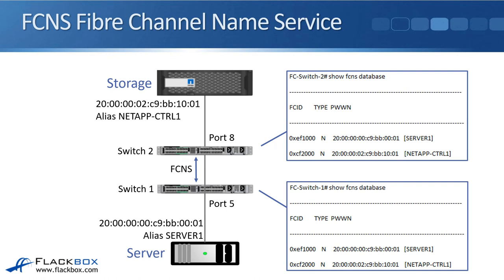Switch 1 and switch 2 have shared information with each other. So if I do a 'show FCNS database' on switch 2, I can see the mappings for the storage system and for the server as well — I can see the WWPN and I can see the FCID. So switch 2 knows how to send traffic to both the storage system and the server, and the same information is on switch 1, so it knows how to send traffic everywhere as well.